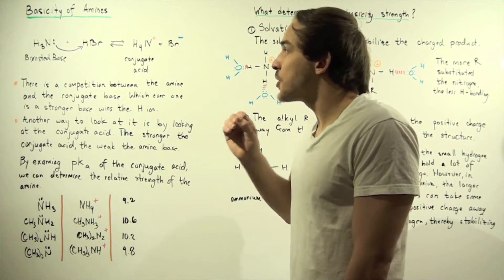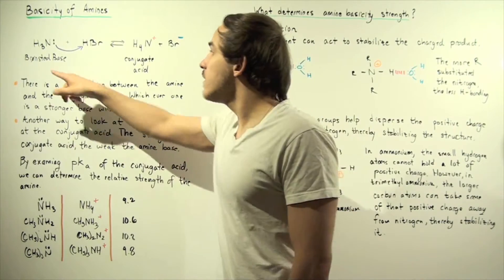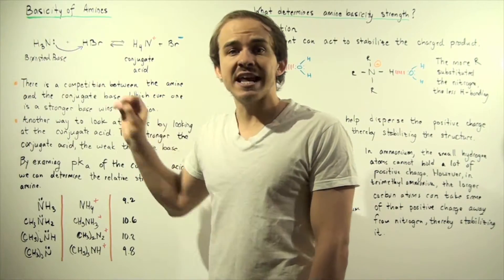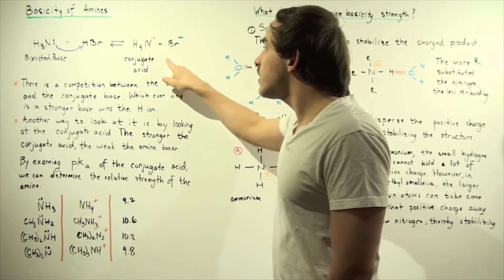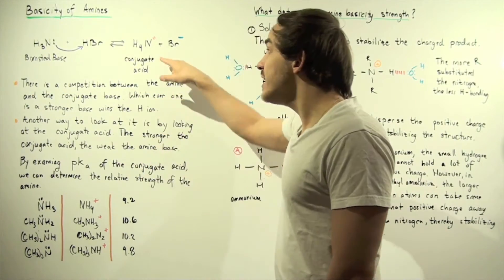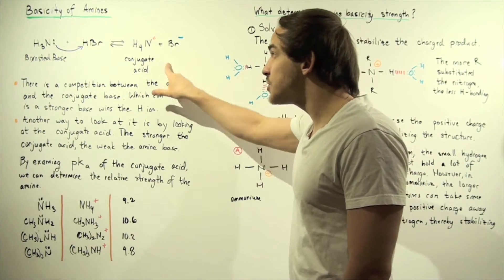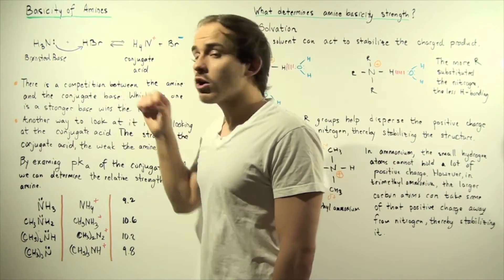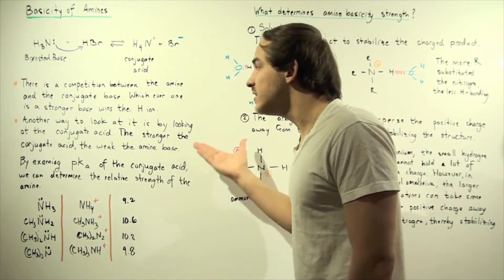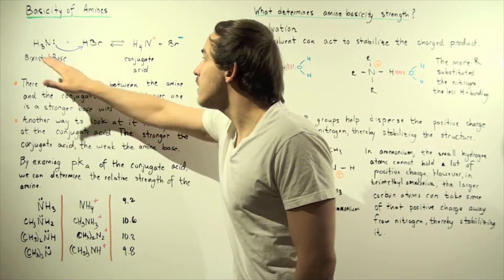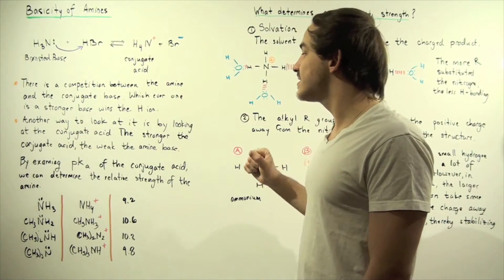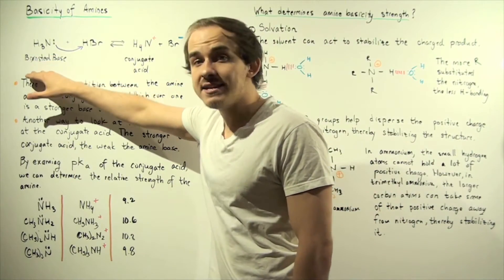Another way to determine the relative strength of an amine is by looking at its conjugate acid. The stronger the conjugate acid is, the weaker the base is. And the weaker the conjugate acid is, the stronger the base is. So another way to assess basicity is by examining the conjugate acid of our amine base.